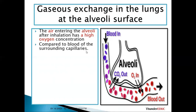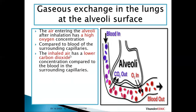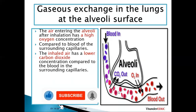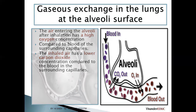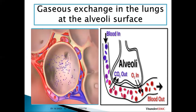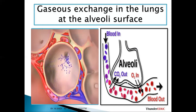Compared to the blood in the surrounding capillaries, the inhaled air has a lower concentration of carbon dioxide. Therefore carbon dioxide cannot go in through diffusion. Remember, diffusion is the movement of molecules from a region of high concentration to a region of low concentration. There is a high concentration of oxygen and low concentration of carbon dioxide in the lungs, and the opposite in the blood.